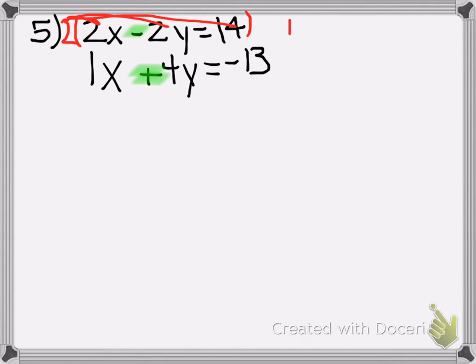So 2 times 2x is 4x minus 2 times 2y is 4y. And that equals 2 times 14. Don't forget that. 28. And then the second equation just stays the same. 1x plus 4y equals negative 13.